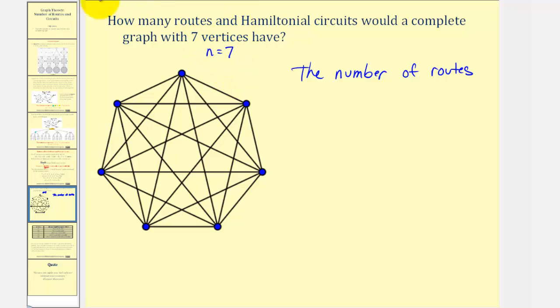Well, seven minus one is equal to six. So the number of routes would be six factorial, which would be six times five times four times three times two times one. So by hand, six times five is thirty, times four is one hundred twenty, times three is three hundred sixty, times two would be seven hundred twenty. So there are seven hundred twenty possible routes visiting all the vertices.